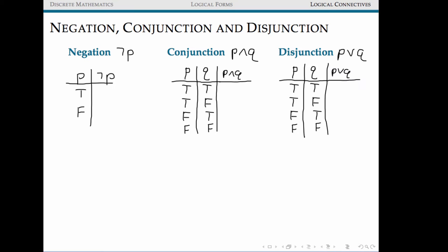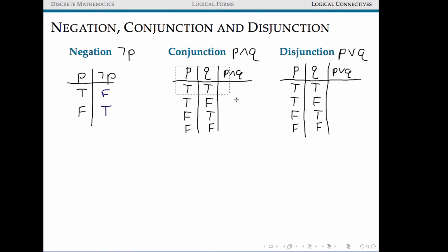In class we covered three different types of logical connectives — a logical connective is just some way of combining or changing different forms. Our first operator is negation: the negation of a logical form has truth value false if the form is true, and true if the form is false, so it exactly flips the values. For conjunction, this is the logical operator meaning 'and,' and this form is only true when both p and q are true — very similar to the intersection operator for sets.